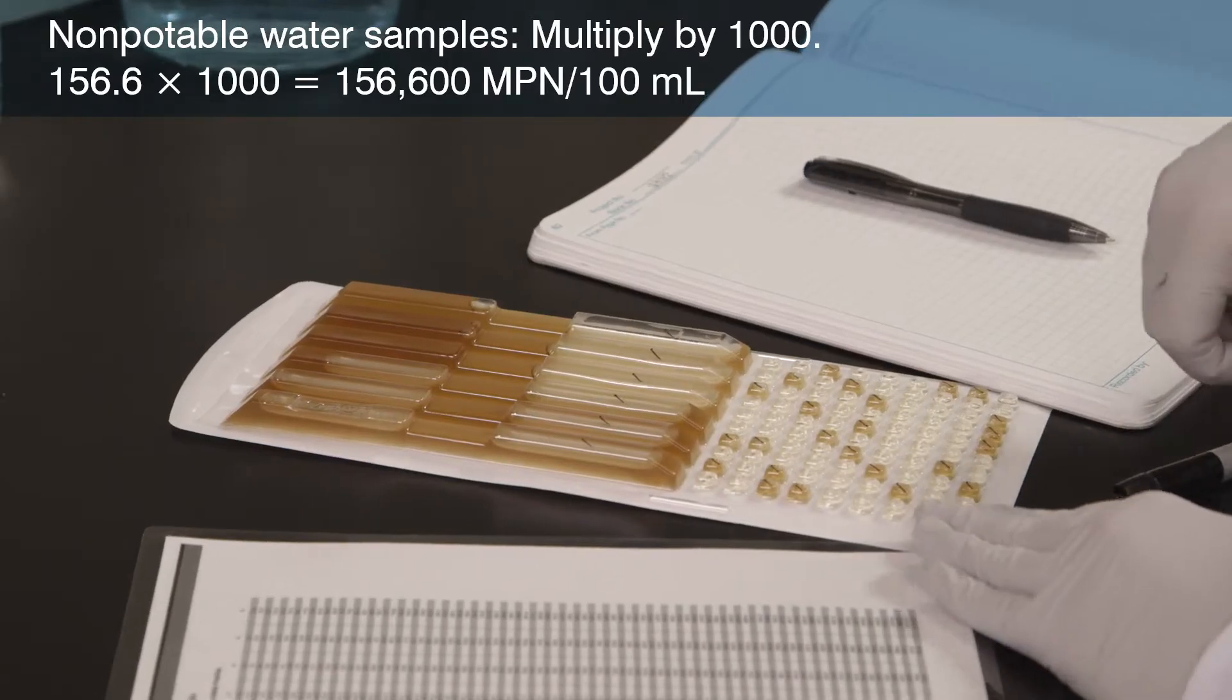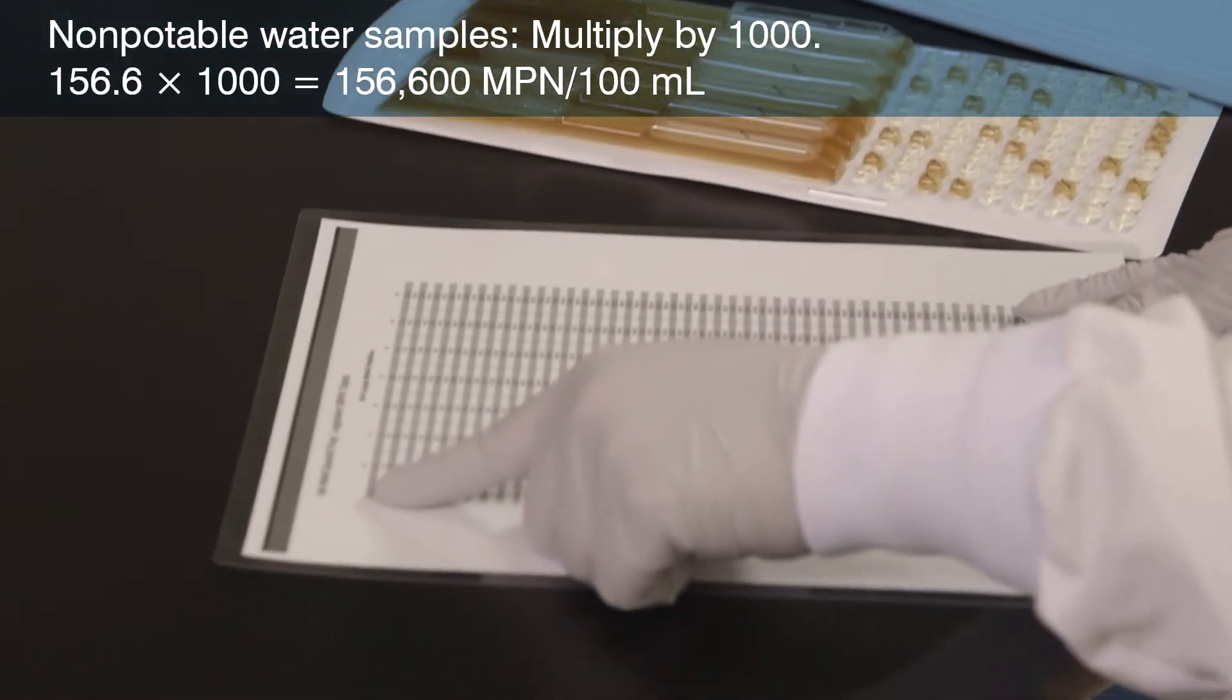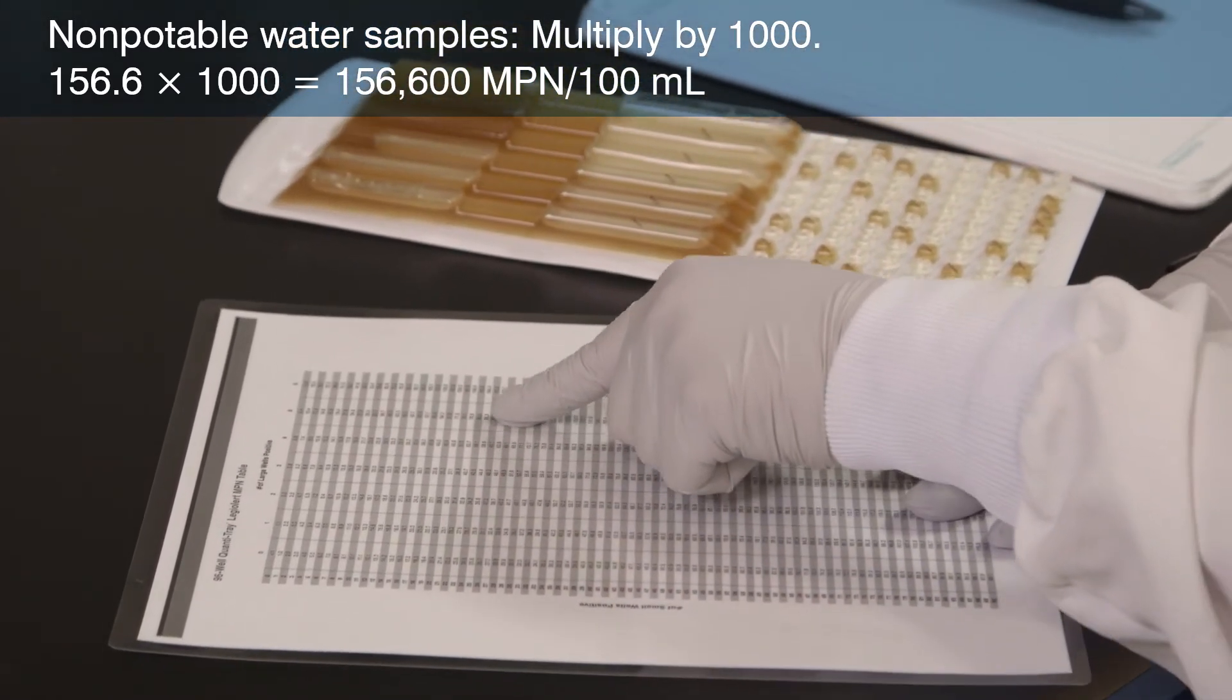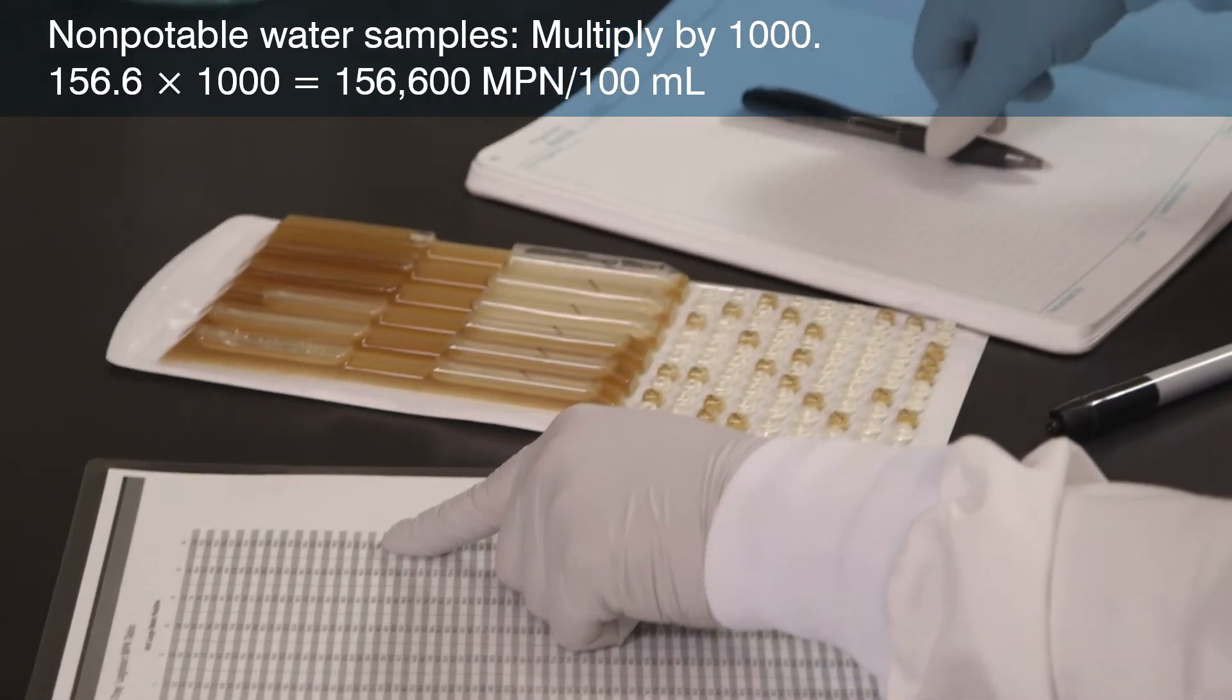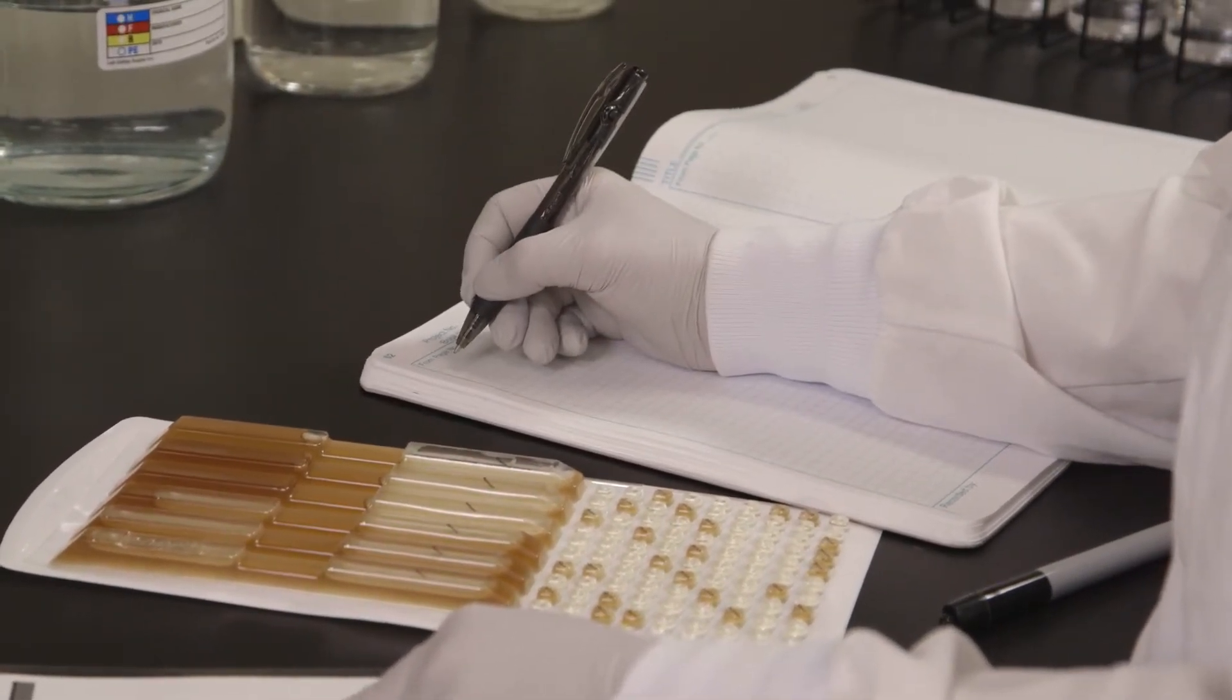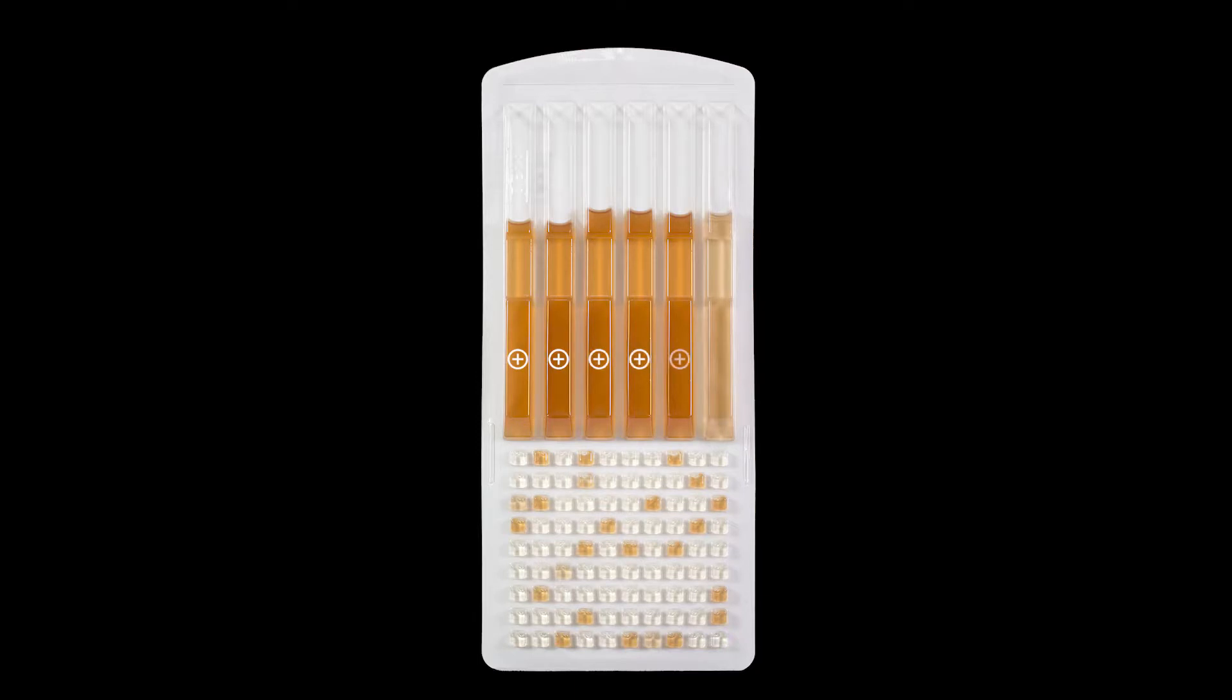The most probable number for this non-potable water example is 156.6 multiplied by a dilution factor of 1,000 to achieve 156,600 per 100 mL.